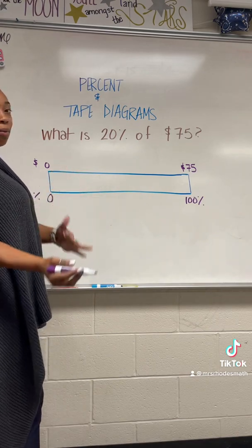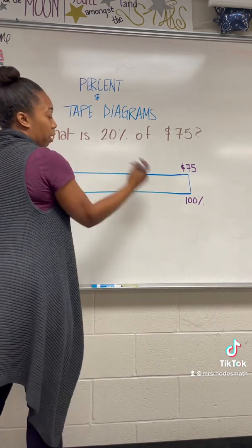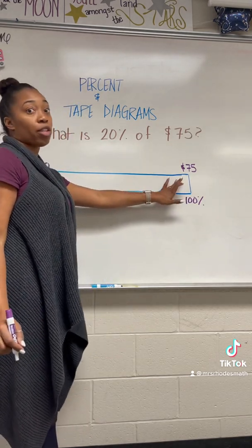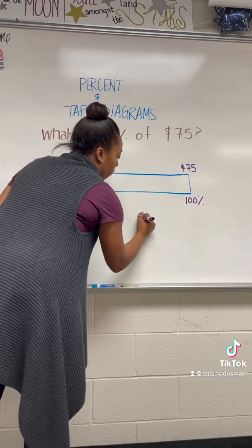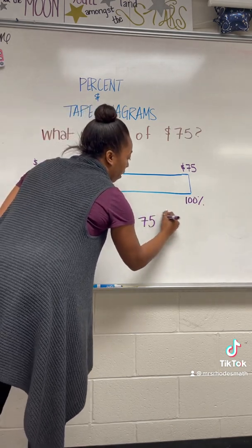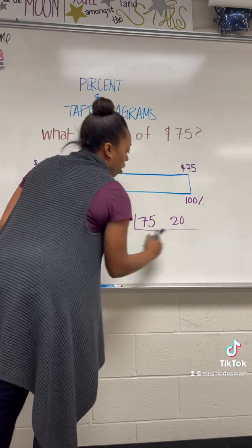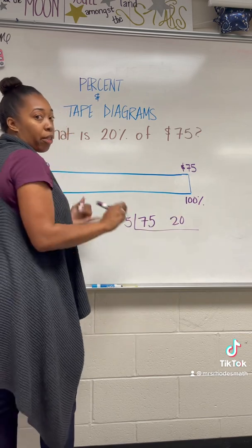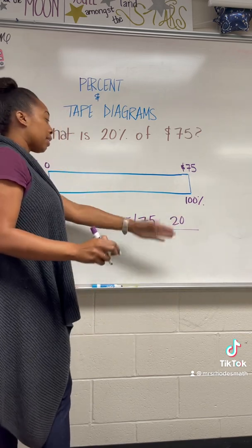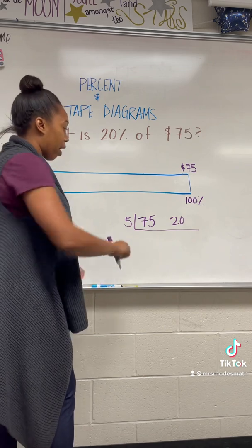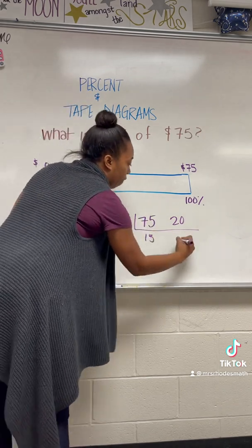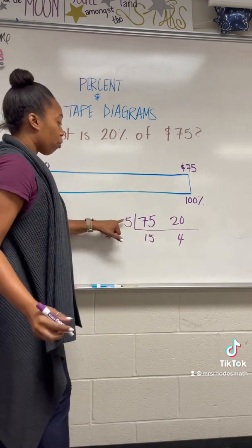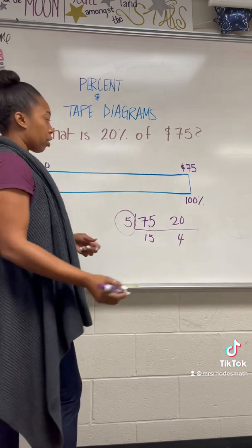Something I would suggest you do is find the GCF of these two numbers. That GCF is going to tell you how many parts to divide your bar into. So I have 75 and 20. We'll start with 5 — you only go until either one of these numbers is prime or until they don't share any other factors. So this is 15 and this is 4. 20 divided by 5 is 4, and 75 divided by 5 is 15. I'm going to use 5 parts because 15 and 4 don't share any additional factors.